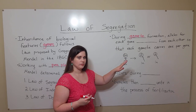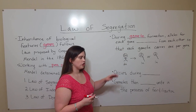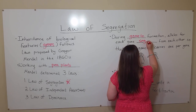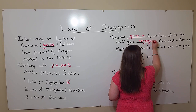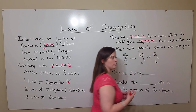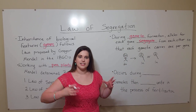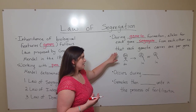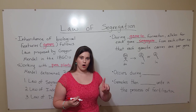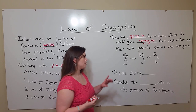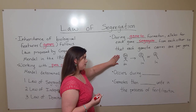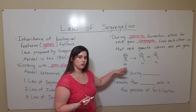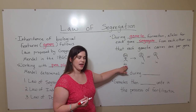During gamete formation, alleles for each gene segregate from each other — this is just another way of saying that they separate from each other. This means that each gamete carries only one allele per gene. Remember that humans are diploid, meaning they have two copies of each chromosome, which is why we call it 2n.